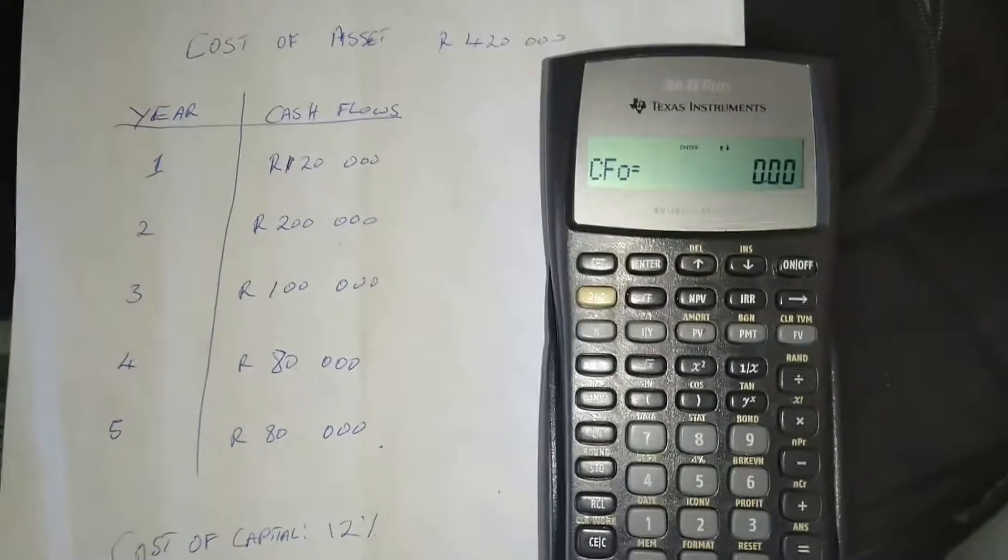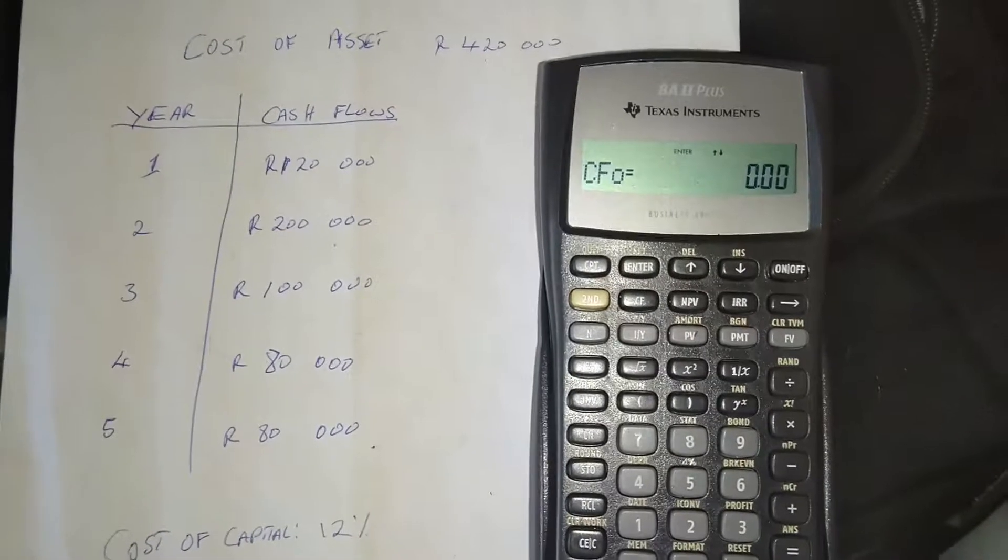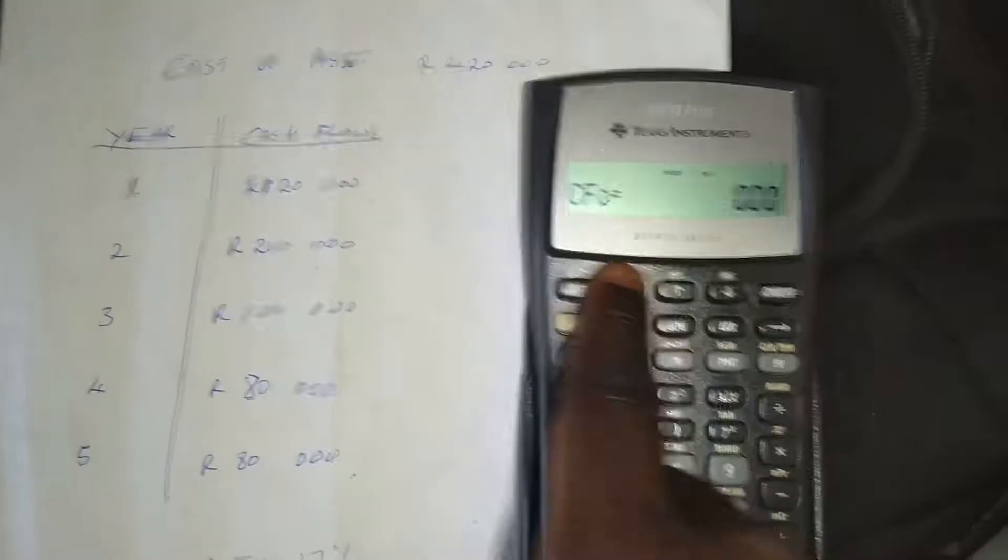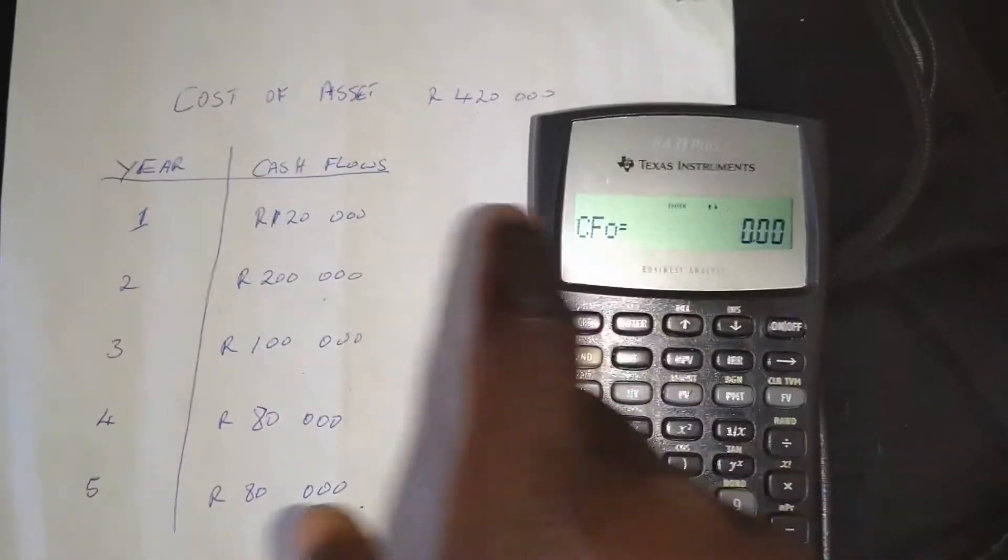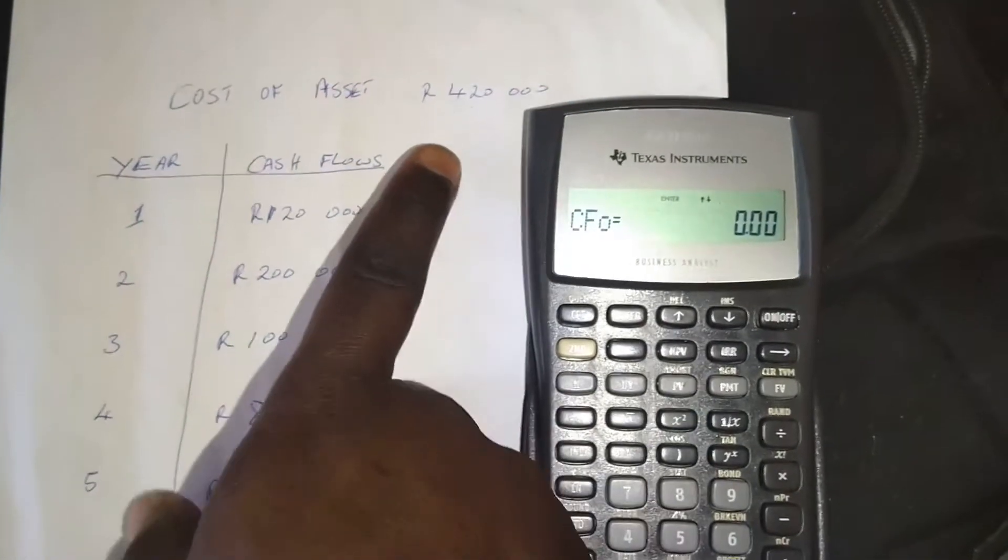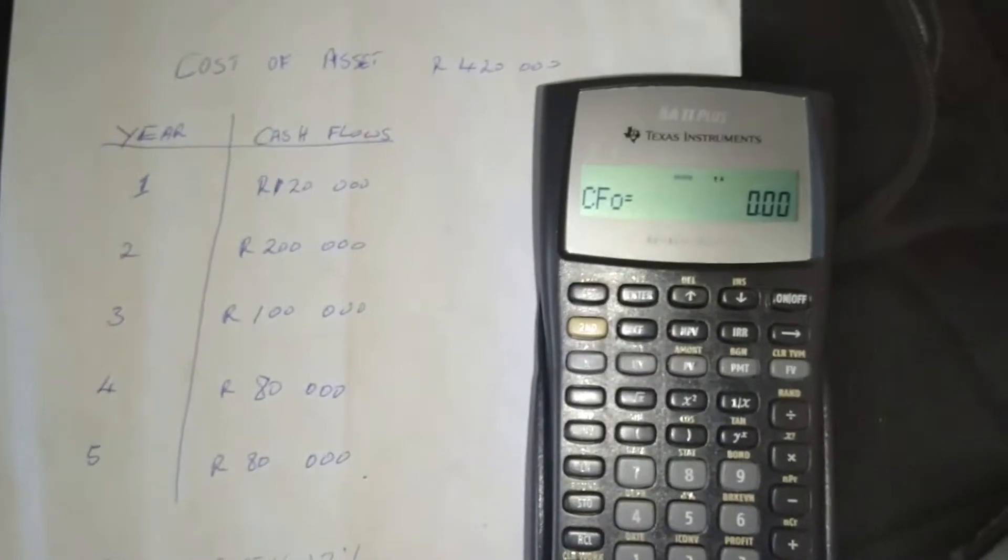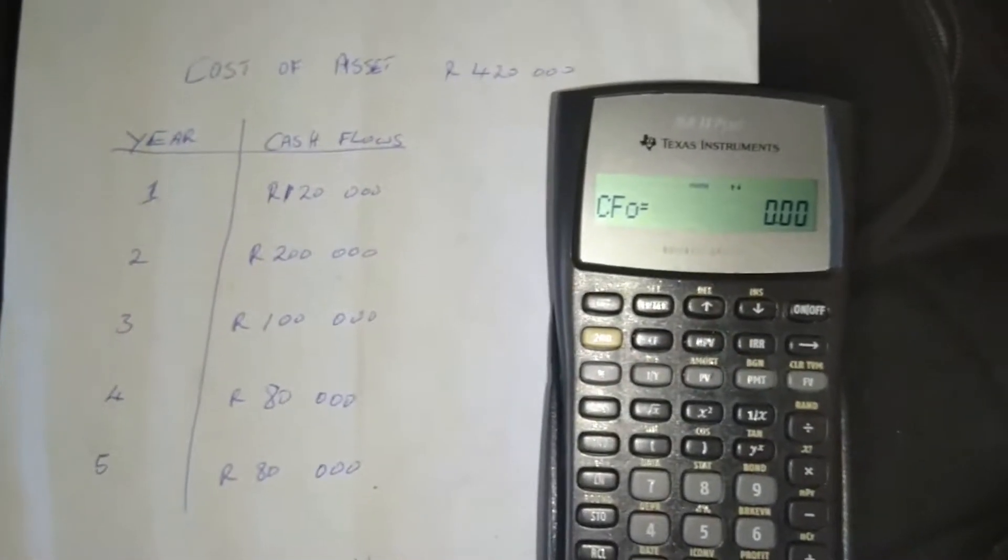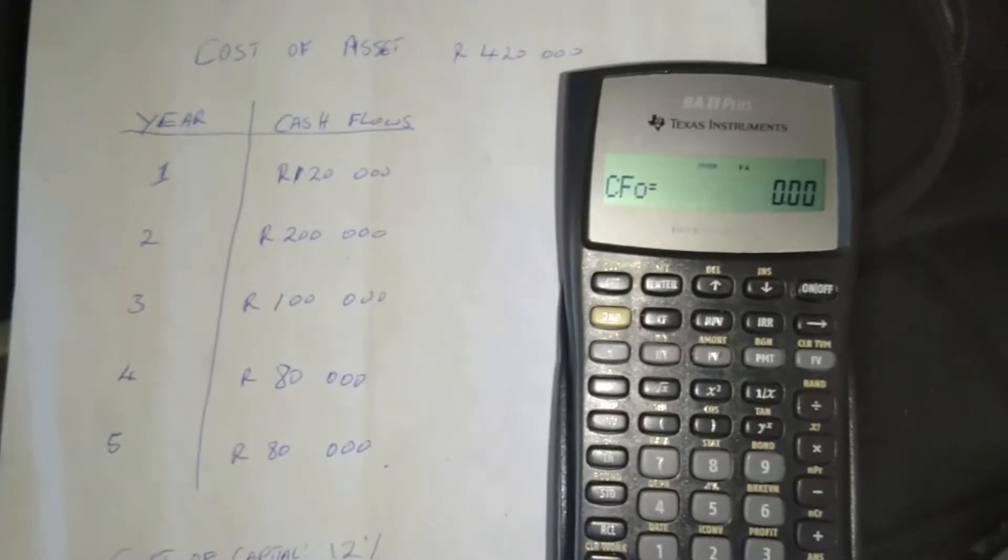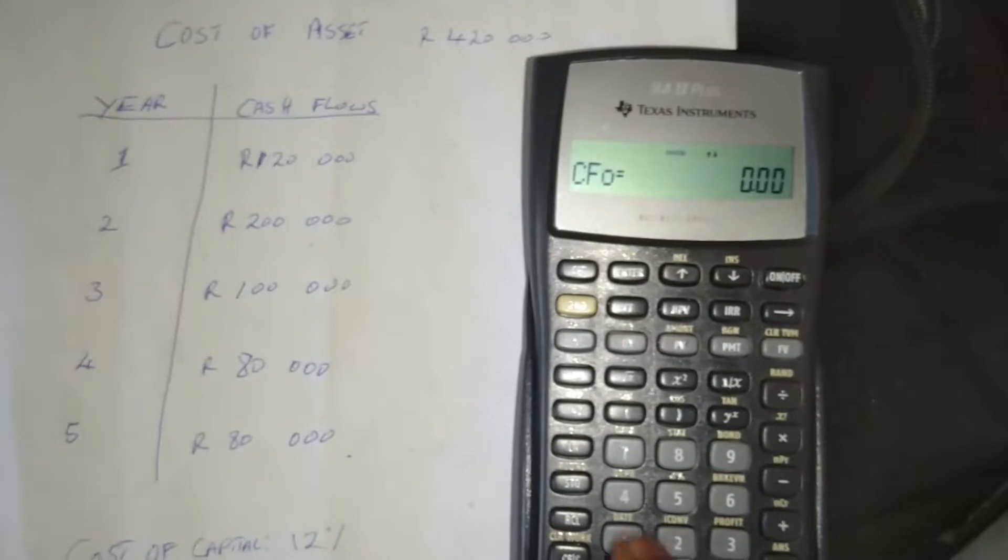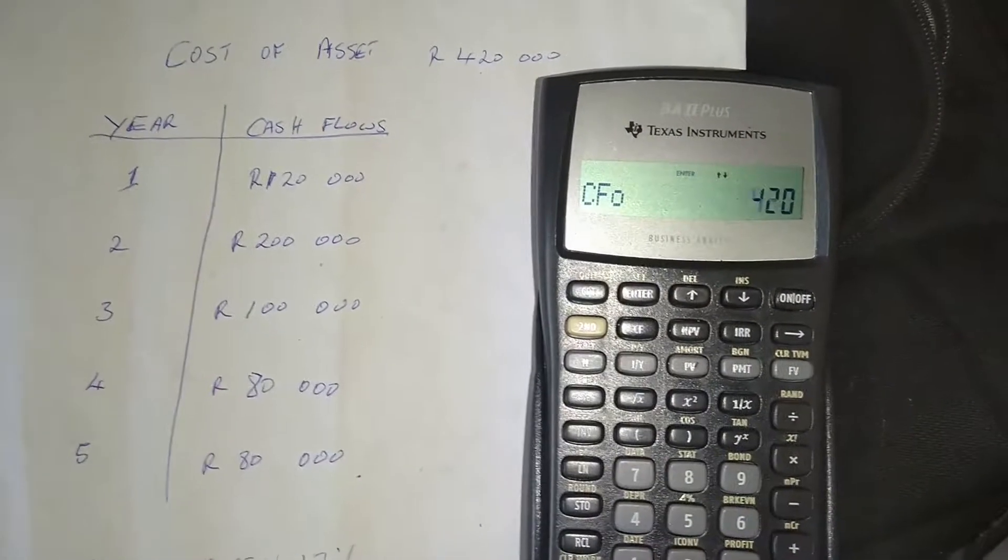And then my memory is cleared. Now I can do the calculations. So once the memory is cleared, obviously, we are still at cash flows. And we can see it's cash flow at year zero. And we can see here we are told that the cost of the asset is 420,000 rand. So if I'm to invest in this project, I will have to pay 420,000 rand to purchase the asset. So it's going to be a negative 420,000 rand.